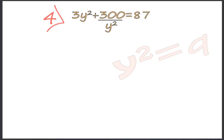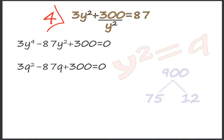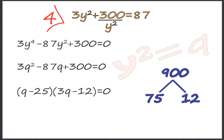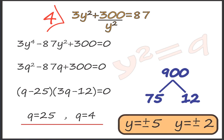For the equation 3y squared plus 300 upon y squared equals 87, we first remove the denominator by multiplying throughout by y squared, getting 3y to the 4th minus 87y squared plus 300 equals 0. Substituting q for y squared gives 3q squared minus 87q plus 300 equals 0. Splitting the middle term: q minus 25 into 3q minus 12 equals 0, so q equals 25 or q equals 4. Since q equals y squared: y equals plus or minus 5, or y equals plus or minus 2.